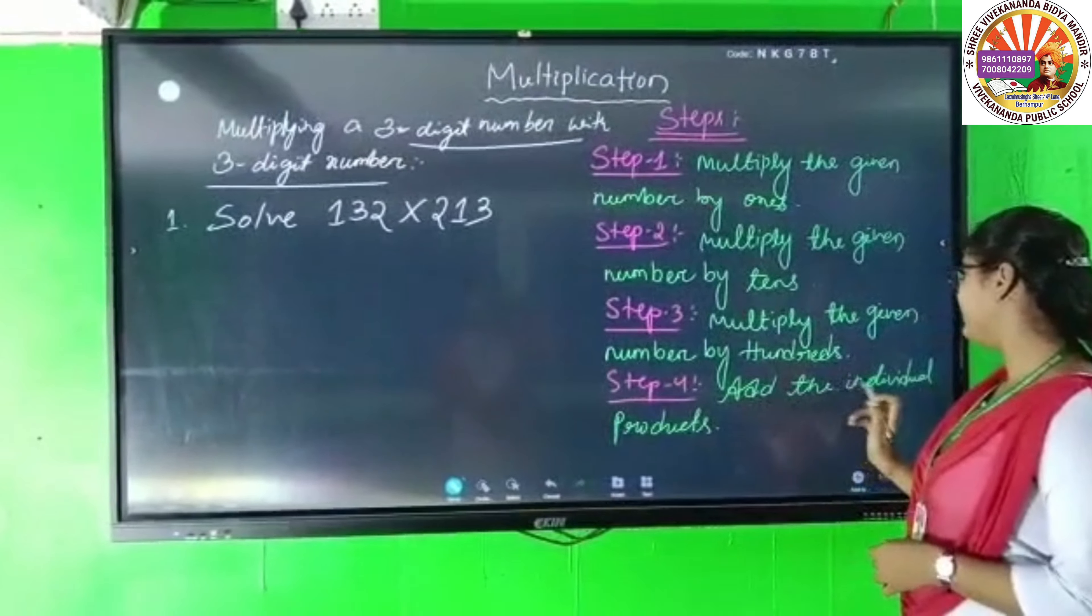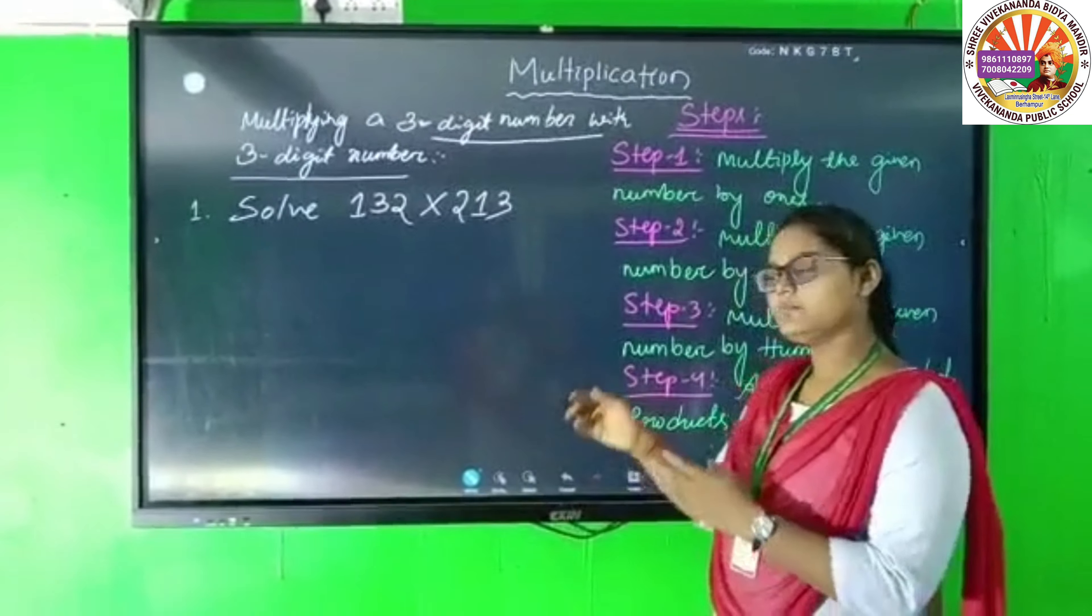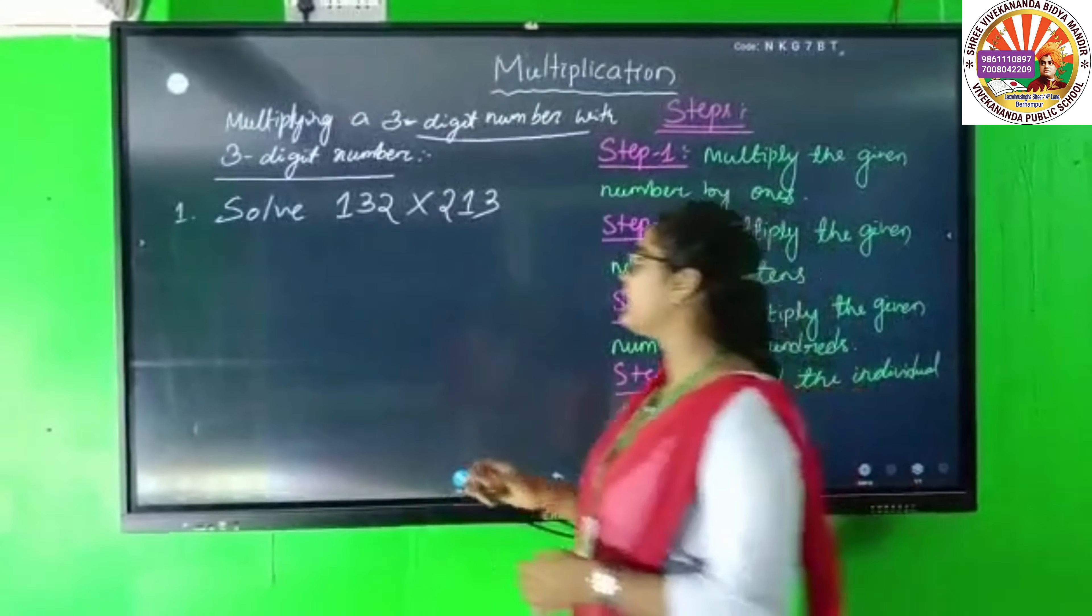The fourth step is to add the individual products. Which are the individual products? We add them. Let's add them.